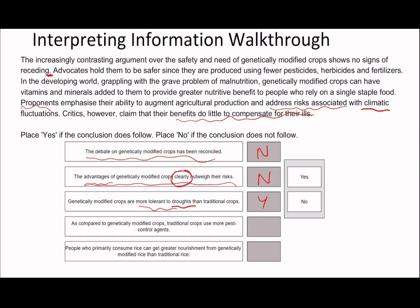Fourth statement: 'As compared to genetically modified crops, traditional crops use more pest control agents.' A lot of people immediately jump to putting no because they see 'fewer' and 'more.' But if you read it carefully, it says advocates hold genetically modified crops to be safer since they're produced using fewer pesticides. The statement says as compared to genetically modified crops, traditional crops use more pest control agents. So this is actually saying the same thing but from opposite sides — this is actually true.